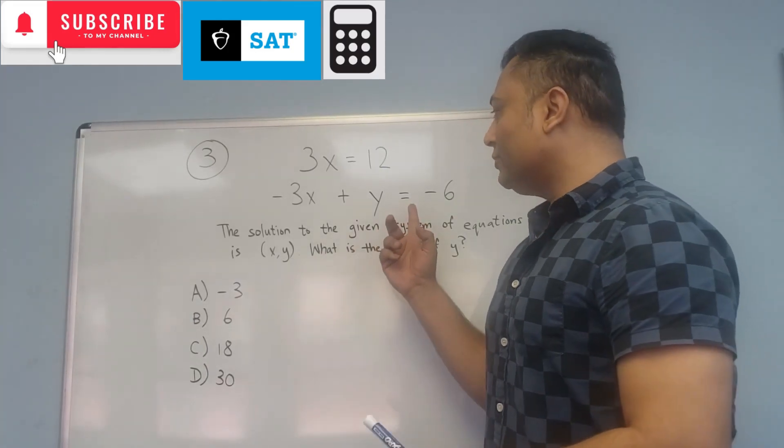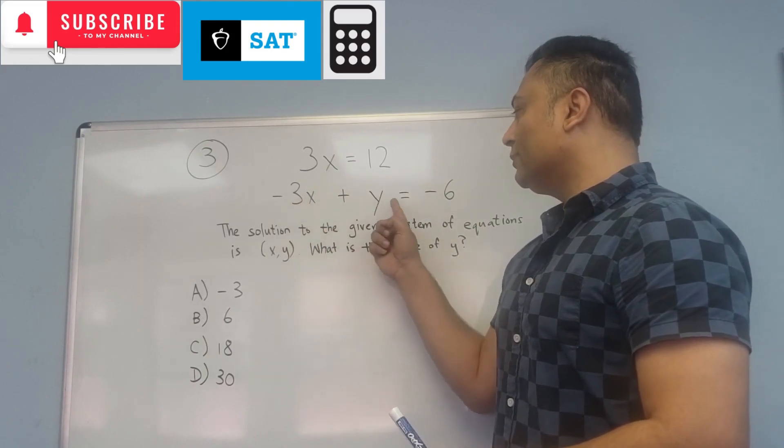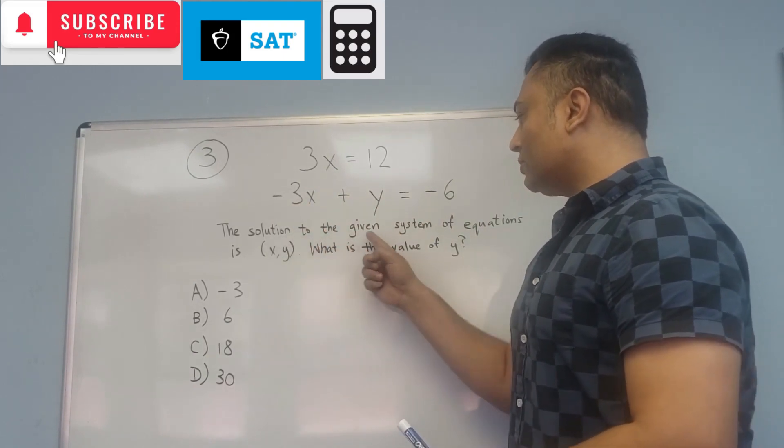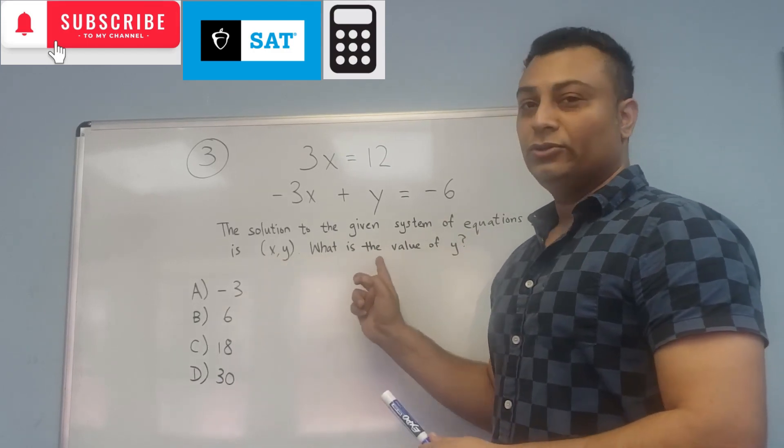We have a system of equations: 3x equals 12, and negative 3x plus y equals negative 6. The solution to the given system of equations is (x, y). What is the value of y?